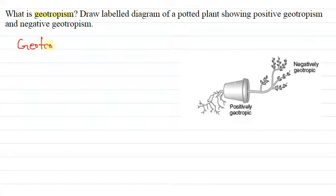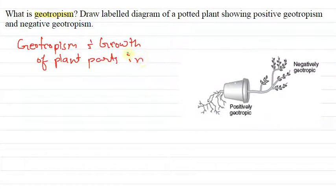Geotropism is the growth of a plant or plant parts in response to the force of gravity.